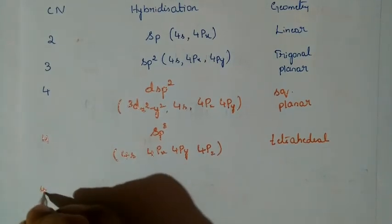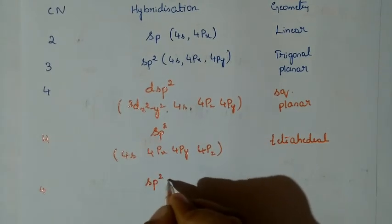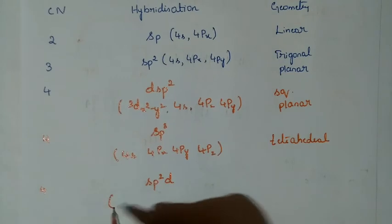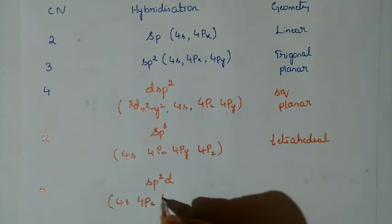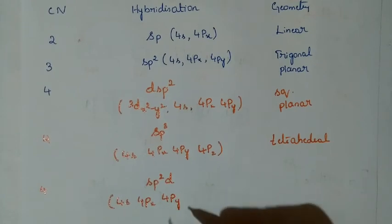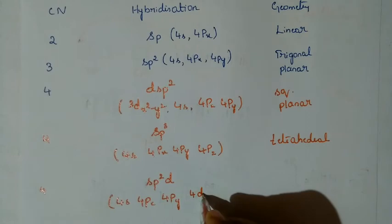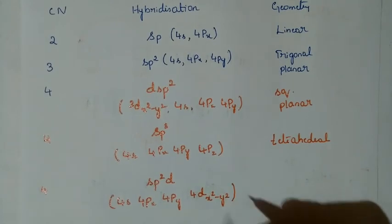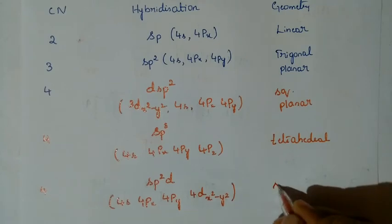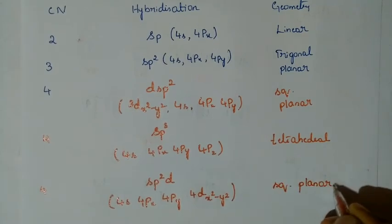Still with coordination number 4, we also have SP2D hybridization. The orbitals involved are 4S, 4PX, 4PY, and 4D x²−y². The geometry is square planar.